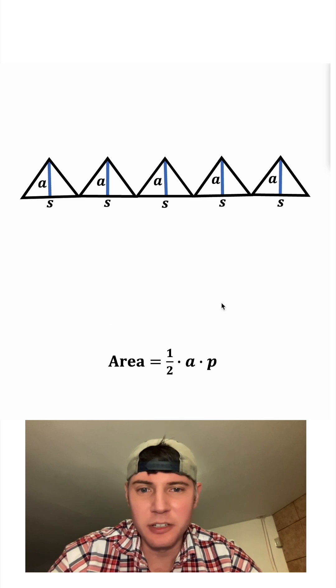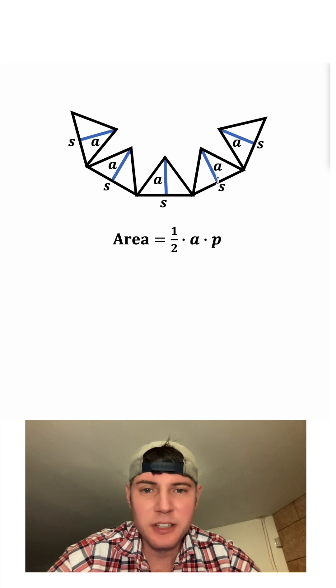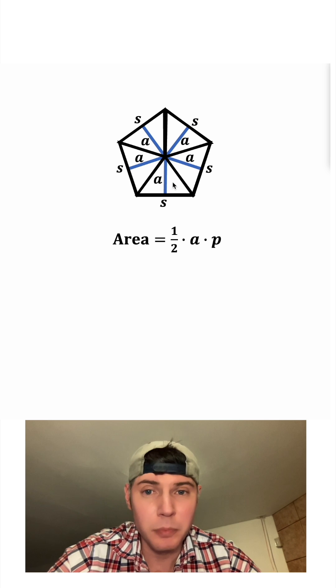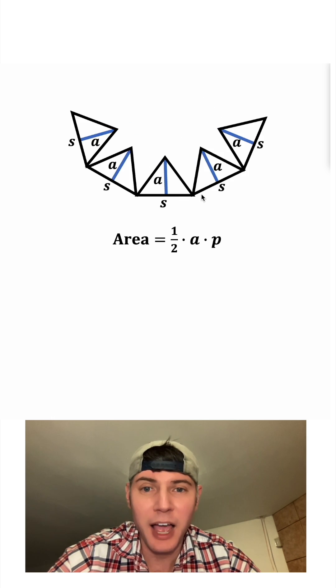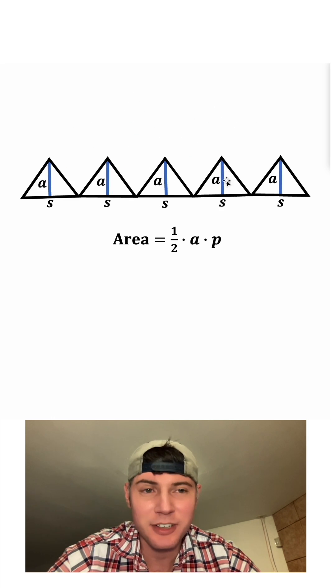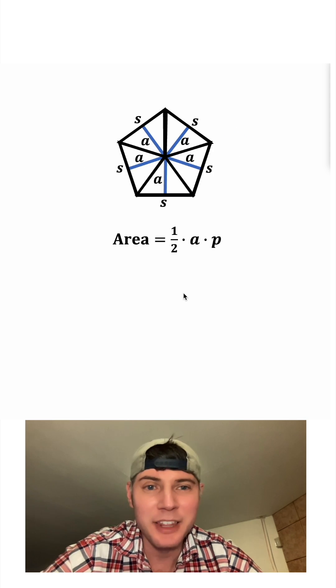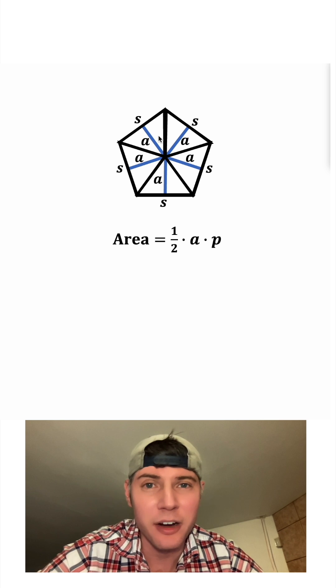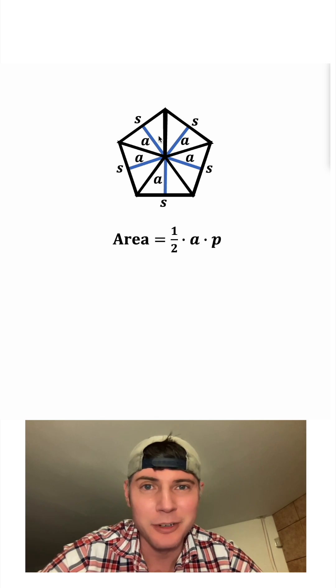And this is how it's derived. We can clear all this up and bring this up. And you just realize that the apothem of the regular polygon forms the heights of the triangles. And then the perimeter is the sum of all the bases of the triangles. And this is why one half apothem times perimeter will give you the area of a regular polygon. How exciting.